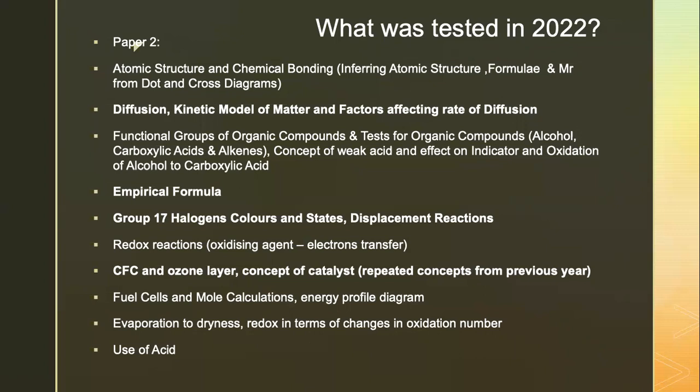For paper 2, the topics tested were atomic structure and chemical bonding, where candidates needed to infer atomic structure, formula, and Mr based on different dot-and-cross diagrams. It was something unusual — they were required to determine all this based on the dot-and-cross diagrams. Normally students are required to draw dot-and-cross, but that year they were required to infer from them.